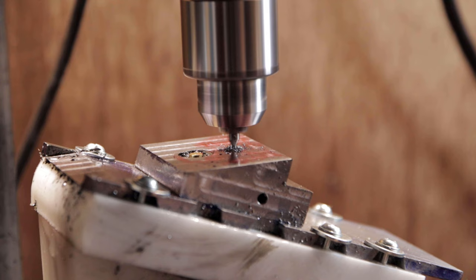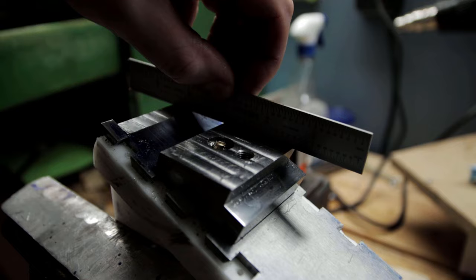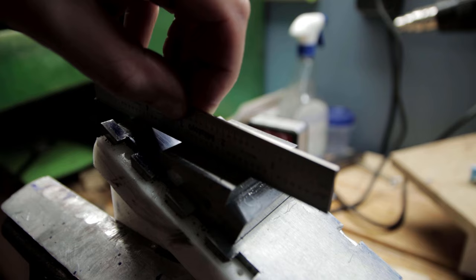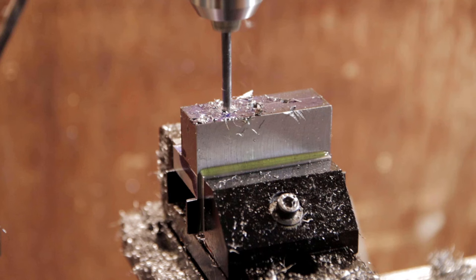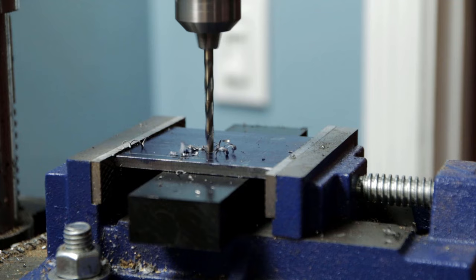Now I'm going to drill and tap for the thumbscrew that's going to hold on my lever cap. Again, just double checking everything's in the same plane. Now I need to work on the movable mouth. Again, it's drill, tap and screws.